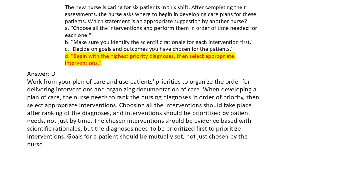Answer D: Begin with the highest priority diagnoses, then select appropriate interventions. Work from your plan of care and use patients' priorities to organize the order for delivering interventions and documentation of care. When developing a plan of care, the nurse needs to rank nursing diagnoses in order of priority, then select appropriate interventions. Choosing all interventions should take place after ranking diagnoses, and interventions should be prioritized by patient needs, not just by time. Evidence-based rationales are important, but diagnoses must be prioritized first. Goals should be mutually set, not just chosen by the nurse.